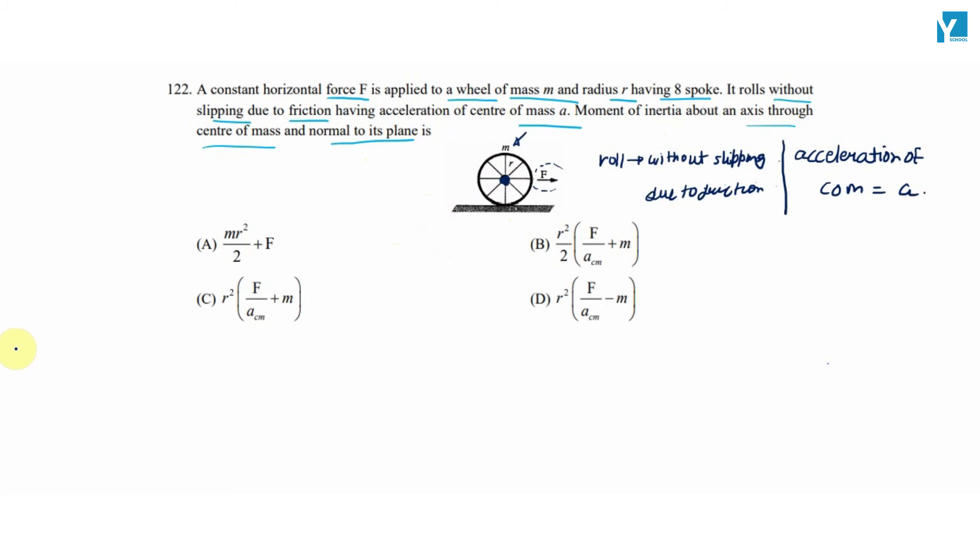For translational motion, acceleration of center of mass is equal to applied force F minus f, where f is the friction force. This implies f equals F minus mass into acceleration of center of mass.